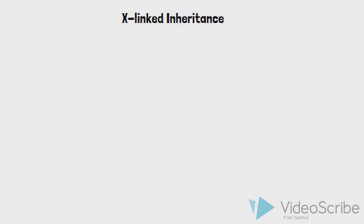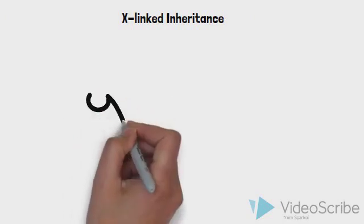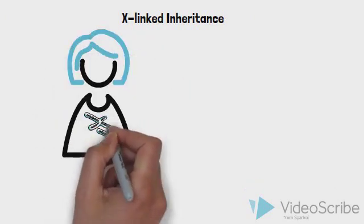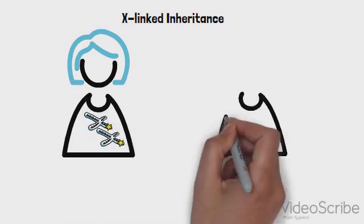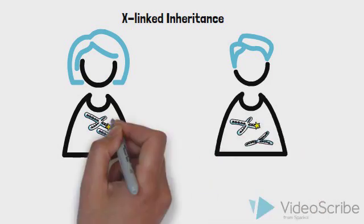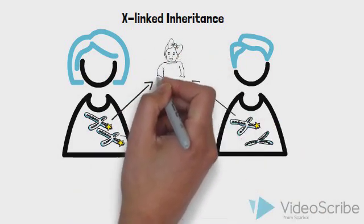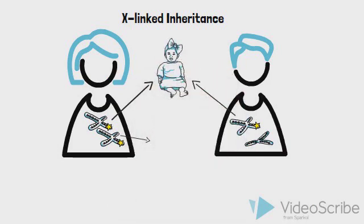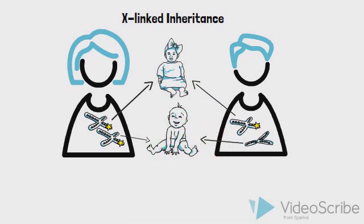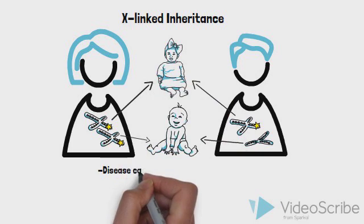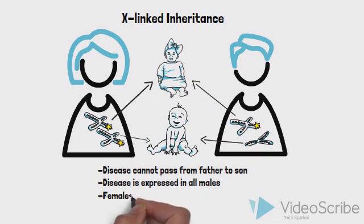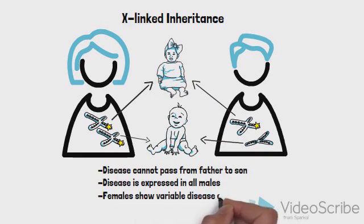Recall that all humans have 22 pairs of numbered chromosomes, known as autosomes. Females have two X chromosomes, whereas males have one X and one Y chromosome. A woman will pass on one of her two X chromosomes in any given pregnancy, while a man will pass on either an X chromosome to a daughter or a Y chromosome to a son. Therefore, in X-linked inheritance, male-to-male transmission is not observed. All daughters of an affected male will inherit the X chromosome with the disease-causing variant.